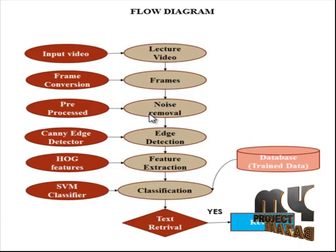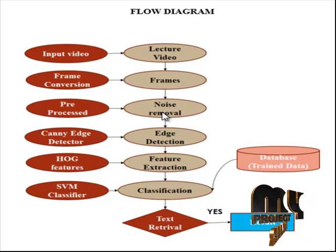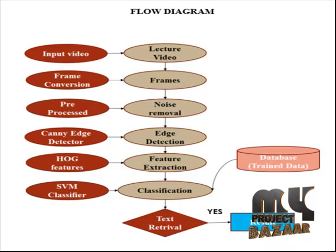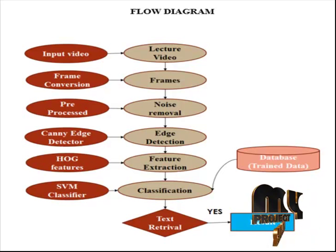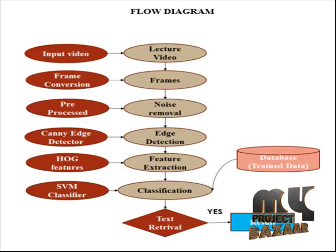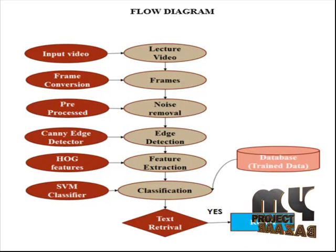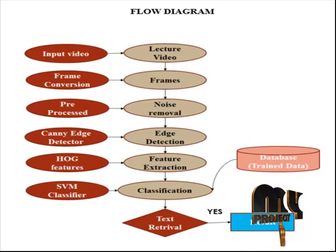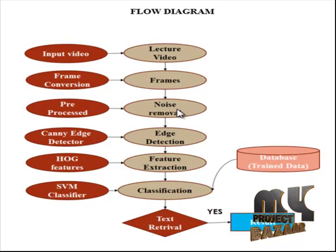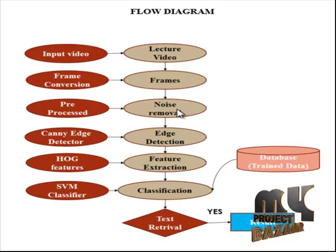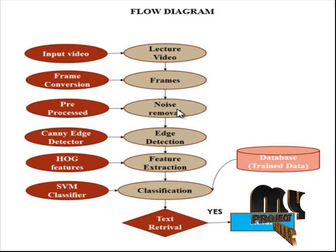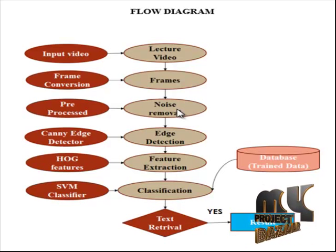Next, in the noise removal preprocessing step, the user can change the size of the image by providing pixel height and width using the imresize function. A blur image with a specified blur type can be selected using the filter type with the imfilter function. The Gaussian filter is a windowed filter of linear class, and the motion filter handles apparent streaking of rapidly moving objects.